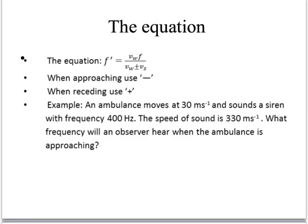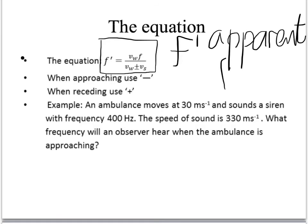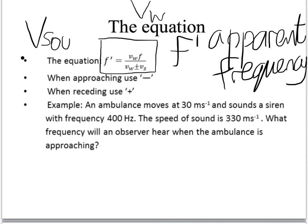Right, the equation. The equation that describes the shift of frequency is this one here. You can see it's given the symbol F dashed. That stands for the apparent frequency or the observed frequency for the Doppler effect. And it's related to the speed of the wave, which is given the symbol V subscript W. In this case, of course, it's the speed of sound. And the true frequency is just F. And the other symbol in the bottom line there is Vs. Vs stands for the source velocity, velocity of the sound source.